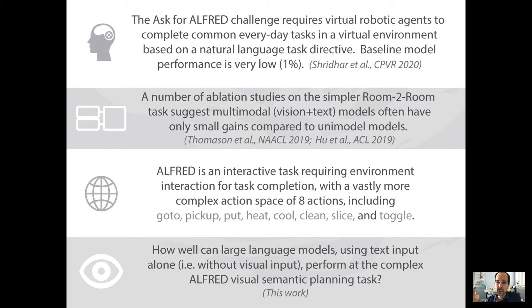One such environment is the Ask for ALFRED challenge, which requires a virtual agent to navigate a complex 3D virtual home environment and complete common everyday tasks. ALFRED's distinguishing features are first that the agent requires actually interacting with the environment—it has to pick up objects, move them, turn on appliances, and so on to complete the task successfully. Second, this rich interactive environment has eight possible actions, about 50 objects, about 26 places to put or place the objects, which make the action space vastly more complex than previous virtual environments like Anderson's popular room-to-room environment.